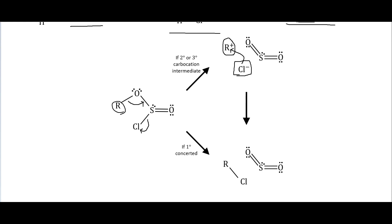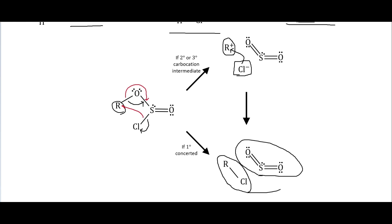For secondary or tertiary alcohols with SOCl2: the electrons from the C–O bond move over, releasing a positively charged carbocation and a negatively charged chloride, which then bonds to the R group. For a primary alcohol instead, a concerted reaction occurs where the electrons move directly in one step, avoiding a carbocation. Either way the products are the chlorinated alkyl group and gaseous SO2, which escapes and prevents the reverse reaction.